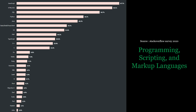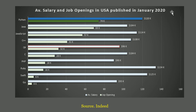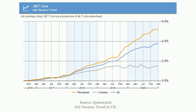Going beyond popularity, let's look at average salary and job openings in the USA by language, sourced from Indeed. Python topped the list with an average salary of $74K. Java is second at $69K. C# is at fifth position with $32K. PHP is 7th, Ruby 8th, and Swift 9th. On job vacancy trends for .NET Core, sourced from IT Jobs Watch, the proportion of all IT jobs advertised in the United Kingdom increased to 5% in January 2020 — definitely not a bad growth.